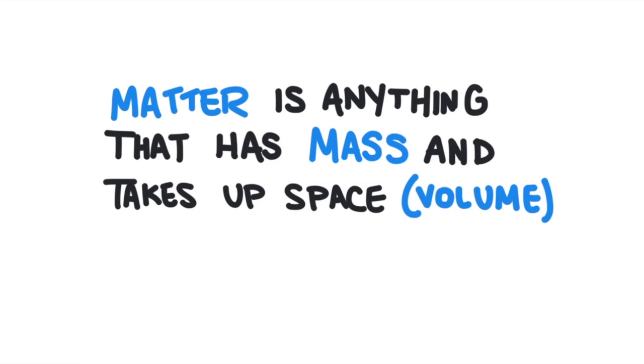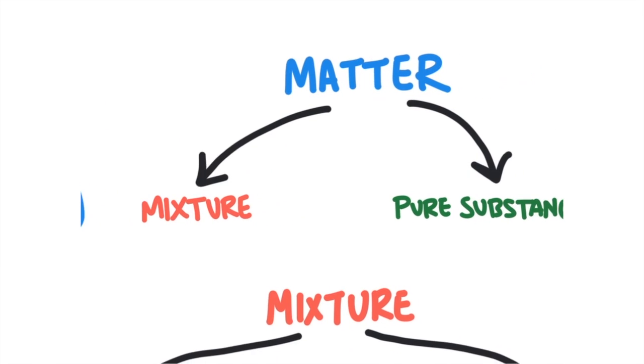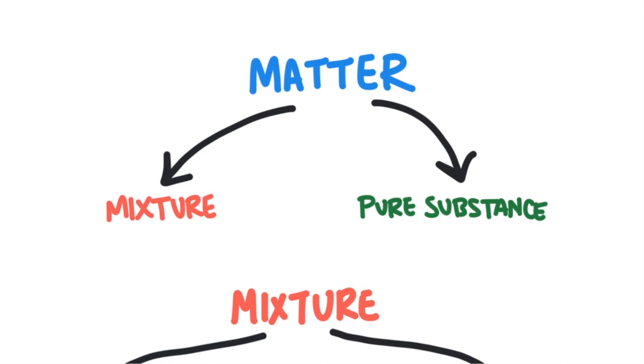We can organize matter into different categories. Most of the matter in the universe is found mixed up with other types of matter, like the air around us. It's mostly oxygen and nitrogen gas, but there's a whole bunch of other stuff there as well. These are called mixtures, when substances are physically combined. There are times when one type of matter is not mixed with any other type of matter. We call this a pure substance.